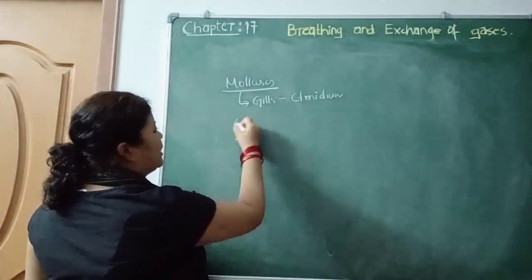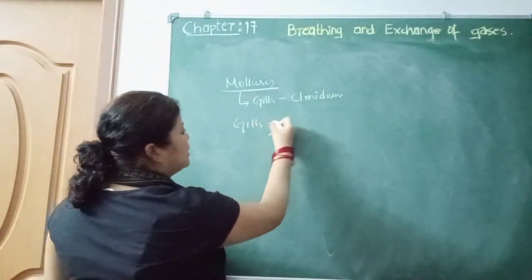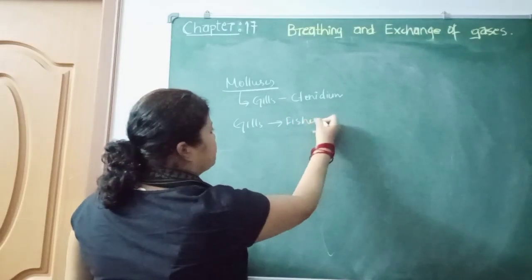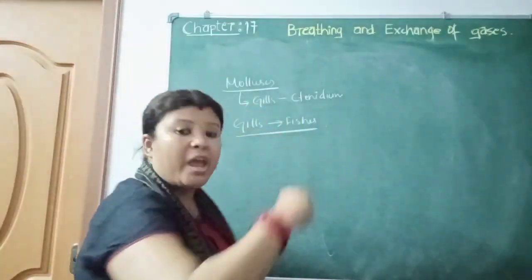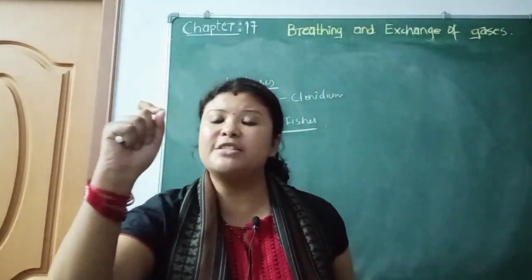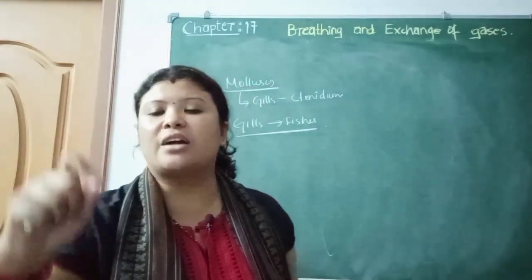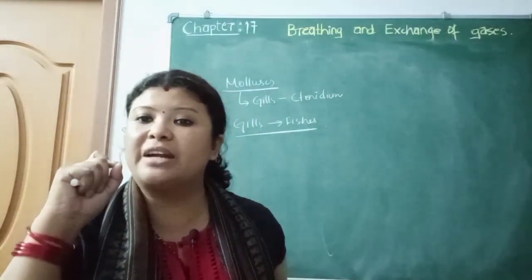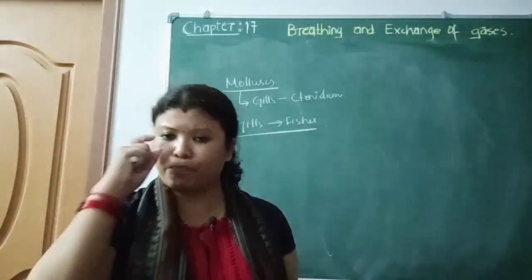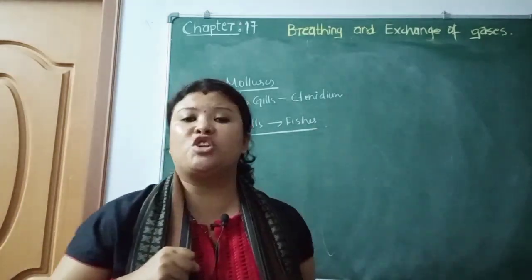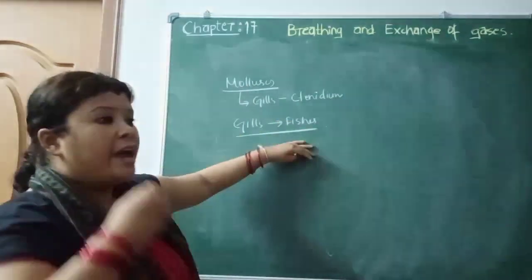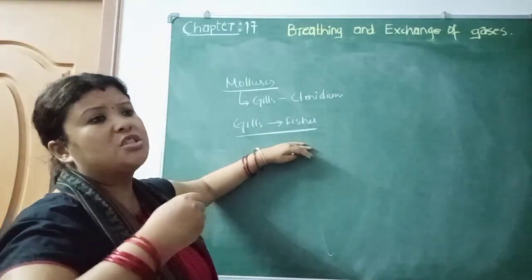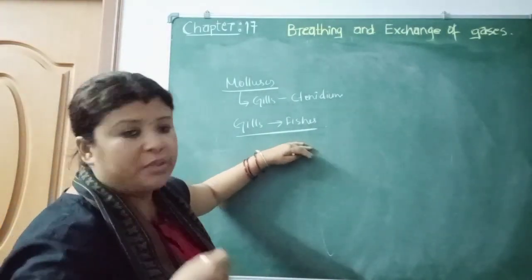In fishes, we have gills. The gills are highly vascularized structures — meaning they are richly supplied with blood vessels — and they help in the exchange of gases. We will also see the functions of gills in later chapters.